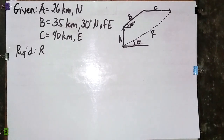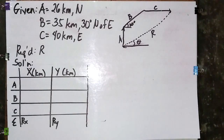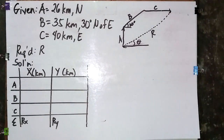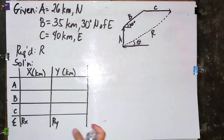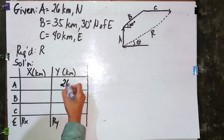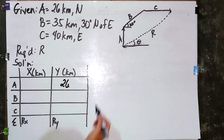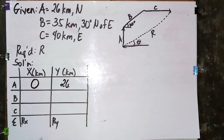Let's start solving using the component method. First step: let's find the x and y components by creating a table. For Vector A, which is 26 kilometers north, it lies on the y-axis. So we place 26 kilometers in the y column, and x has 0 kilometers.